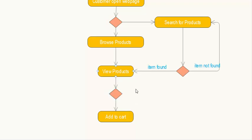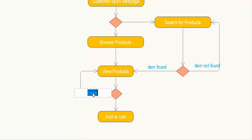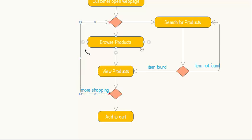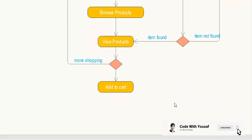If the customer wants to do more shopping, the flow loops back to the start. The more-shopping option is drawn connecting back up to the beginning of the flow.